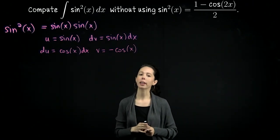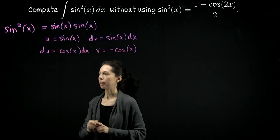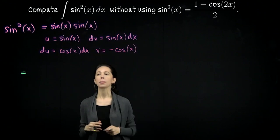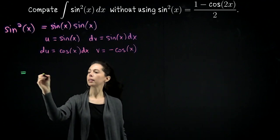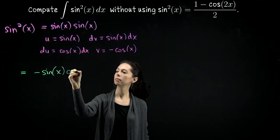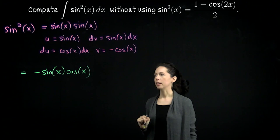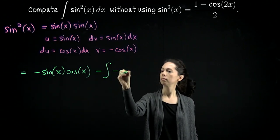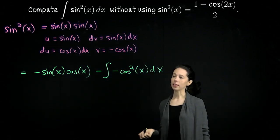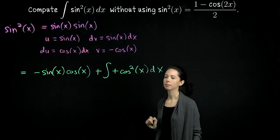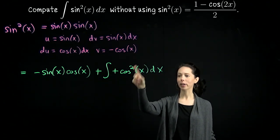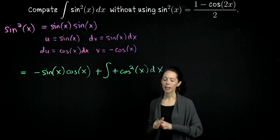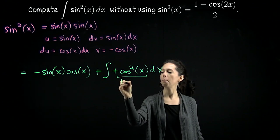This line is not worse than how we started, so let's get going. Using integration by parts, the anti-derivative of sine squared of x after this decomposition is u times v: negative sine of x times cosine of x, minus the integral of v times du, which is negative cosine squared of x dx. You might think we should do another round of integration by parts with cosine times cosine, but that would revert us back to sine squared. Instead, we use the fact that cosine squared of x equals 1 minus sine squared of x.